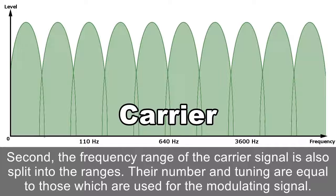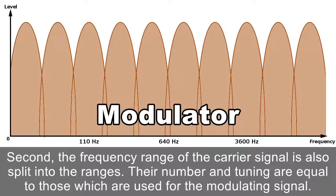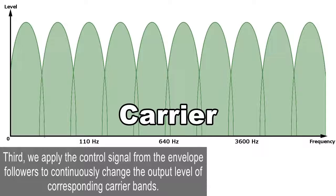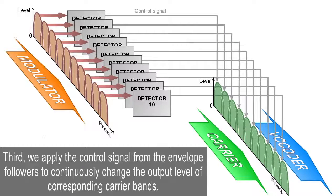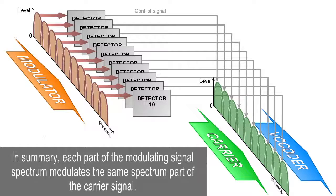Second, the frequency range of the carrier signal is also split into ranges. Their number and tuning are equal to those used for the modulating signal. Third, we apply the control signal from the envelope followers to continuously change the output level of the corresponding carrier bands. In summary, each part of the modulating signal spectrum modulates the same spectrum part of the carrier signal.